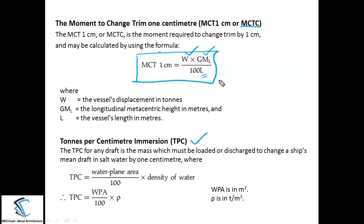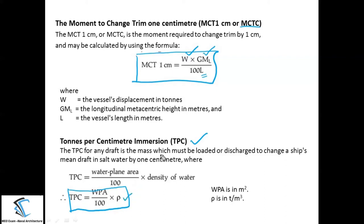The second concept is TPC — Tons Per Centimetre immersion. For a particular ship at a particular draft, TPC is the amount of cargo required to be placed on the ship to get one centimetre increment in draft; conversely, how much cargo must be removed to get one centimetre rise in draft. The formula is: TPC = (water plane area × density of fluid) / 100.